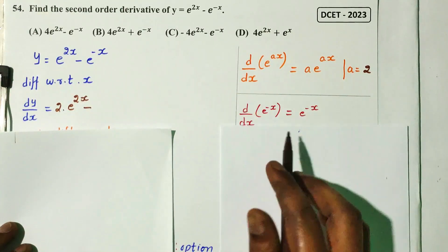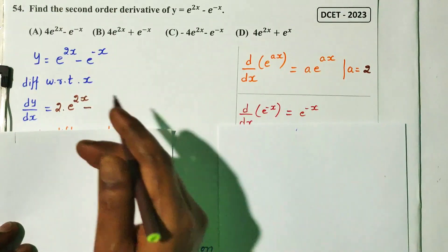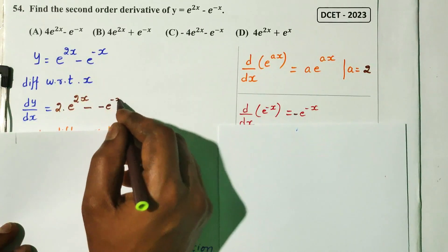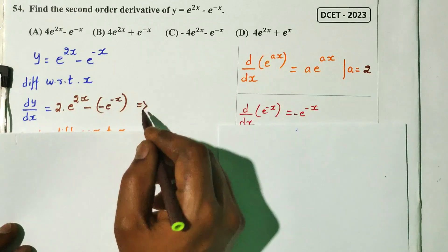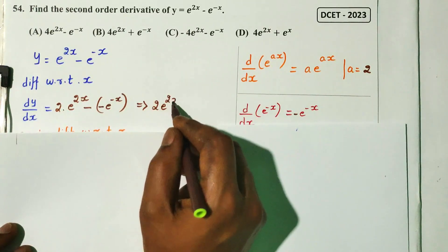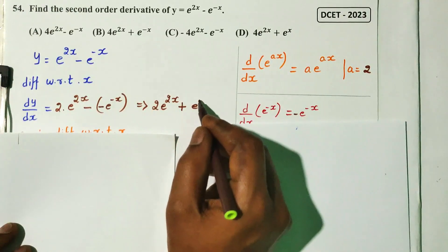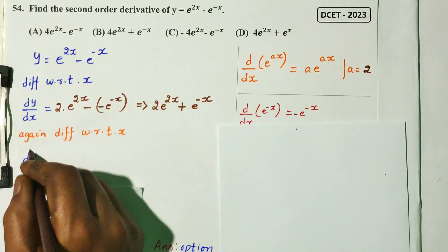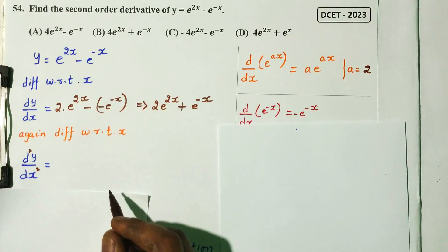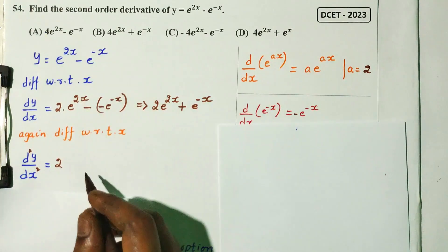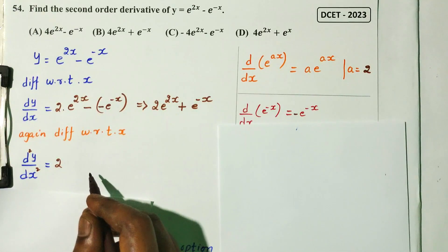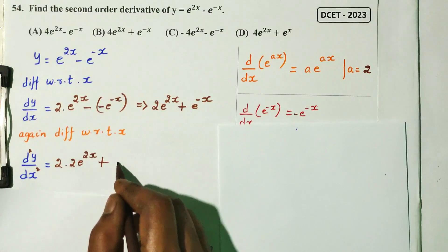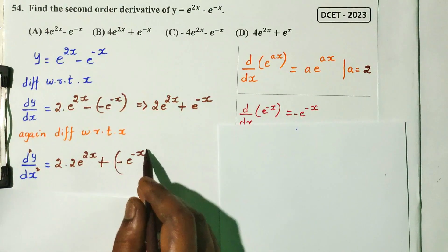For minus e^(-x), differentiating gives minus times minus e^(-x), which equals plus e^(-x). So dy/dx = 2e^(2x) + e^(-x). Now differentiating again for the second order derivative d²y/dx².